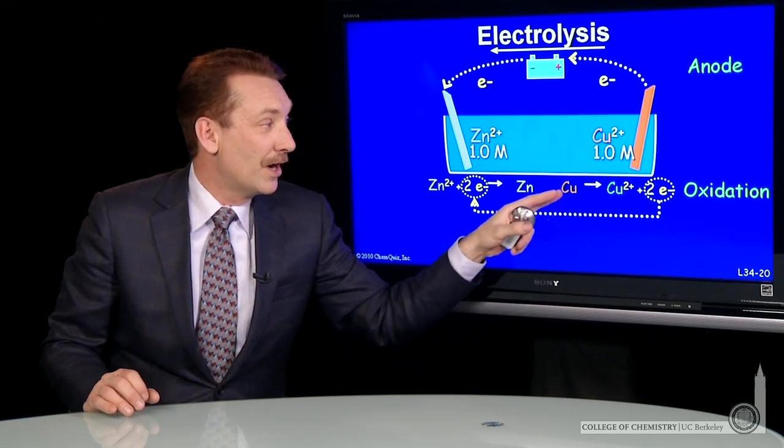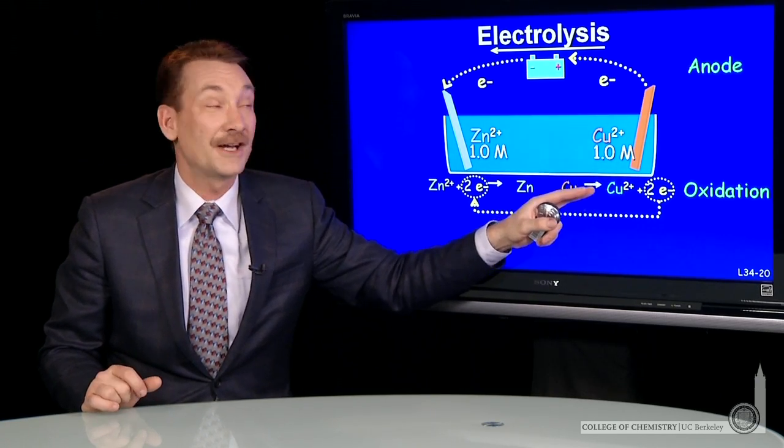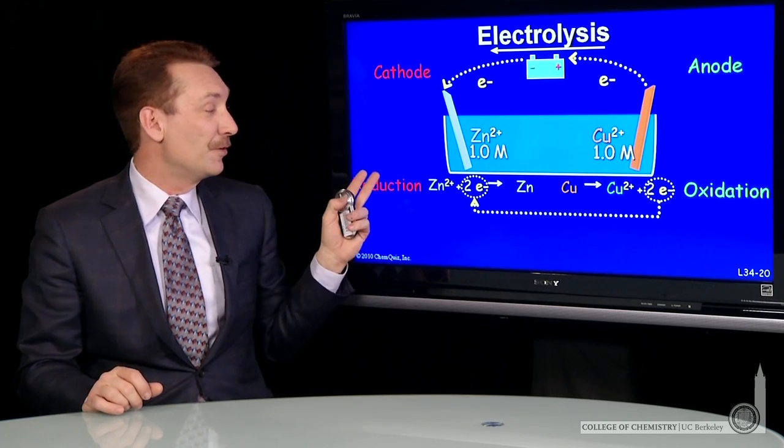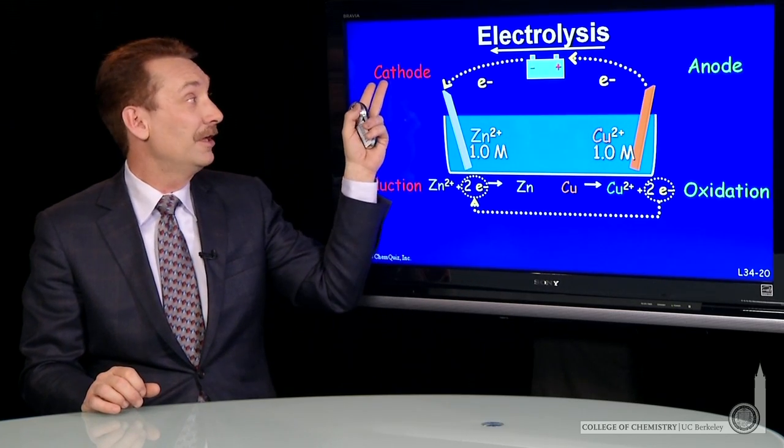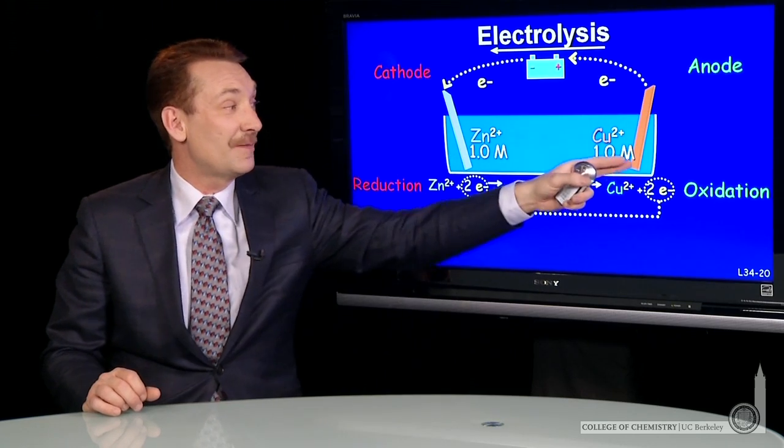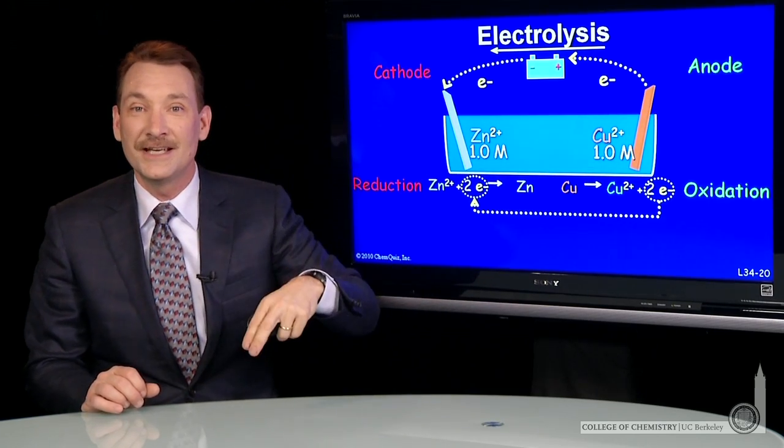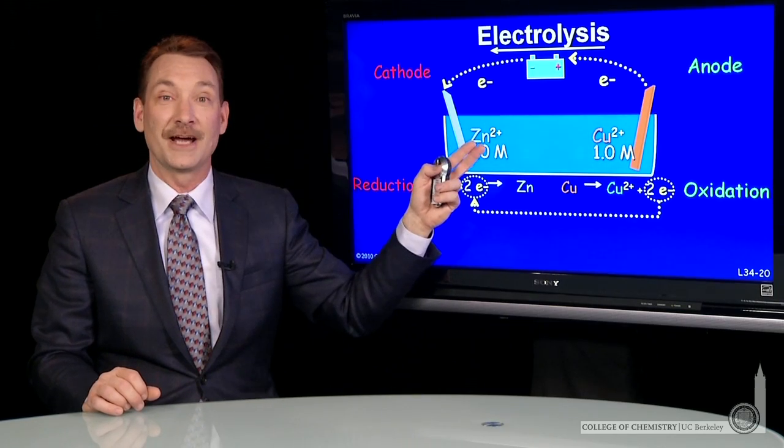Where the oxidation occurs, that electrode is called the anode. And where the reduction occurs, that's called the cathode. So the same designation of electrodes is used in electrolysis as in the galvanic reaction.